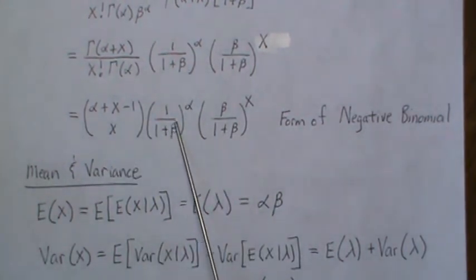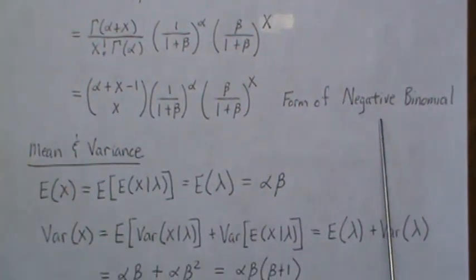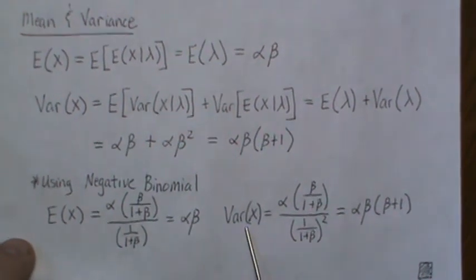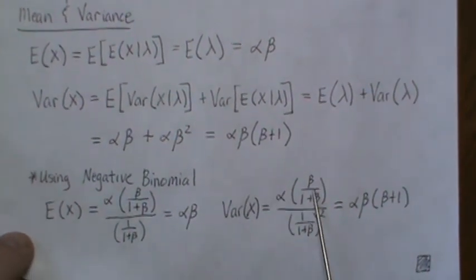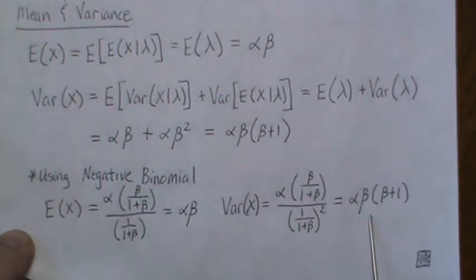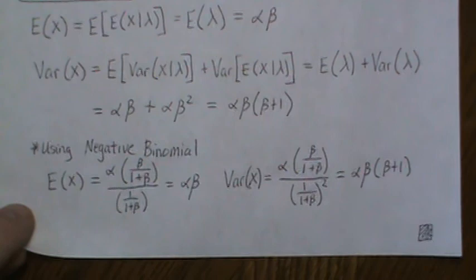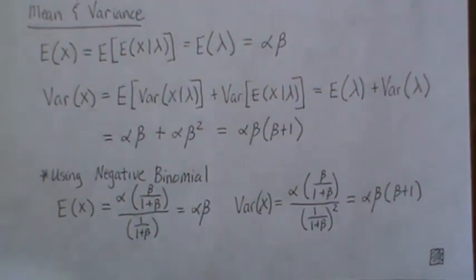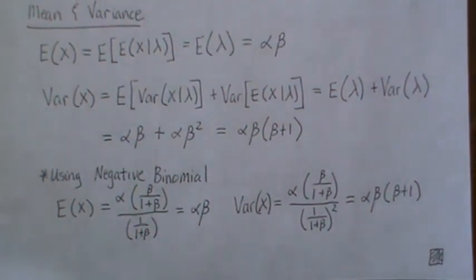Now the variance is r times 1 minus p divided by p squared, and then when you simplify this you get the same exact result. Well that's all I have for today. Hopefully you enjoyed that, I sure did. Please like the video and subscribe so you don't miss the next one. Thanks, bye.